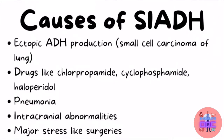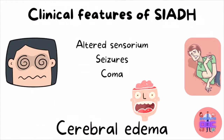The most common and most important cause of SIADH is ectopic antidiuretic hormone production from malignancies, particularly small cell carcinoma of the lung. Other causes include drugs such as chlorpropamide (a diabetes drug), cyclophosphamide (used in malignancies), and haloperidol (an antipsychotic). Pneumonia, conditions with increased intracranial tension such as brain tumors and head trauma, and major stressors like surgery can also cause SIADH.